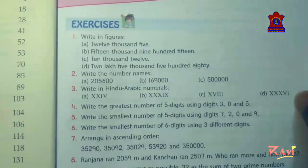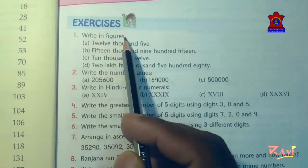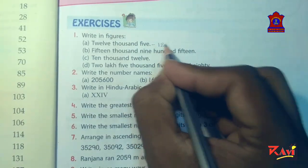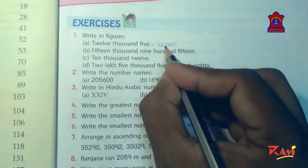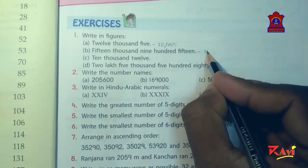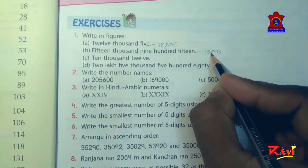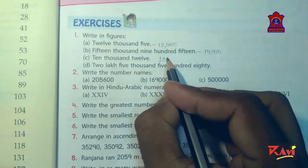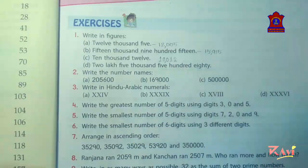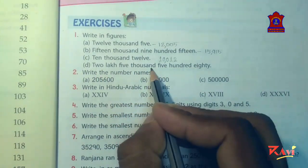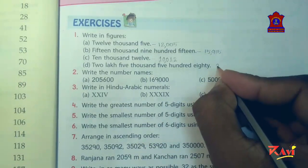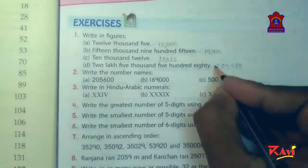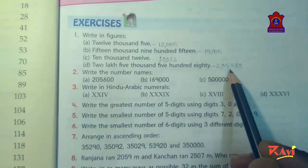Look at question number 1: write in figures. 12,005 — see, here I am writing 12,005. Clear? Similarly 15,915 — write it like this. Clear? C is 10,012. It is 10,012. D is 2,05,580 — so 2,05,580. Clear? Like this you have to write. I have written this in the book but you have to write this in your notebook.